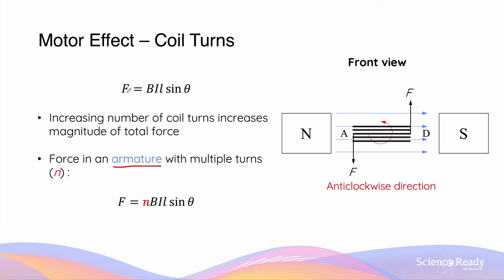So we can modify the original motor effect equation — which is only for one turn of coil — into F = N × BIL sin theta, where N is the number of turns, multiplied by the magnitude of the motor effect force acting on one single turn.